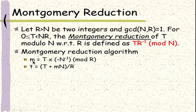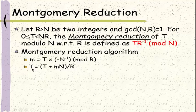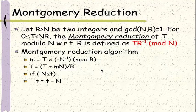Next, we add t and m times n, and the sum will be divided by r. The quotient t will be compared with n. If n is less than or equal to t, n will be subtracted from t. And the final value of t will be reported as the Montgomery reduction.